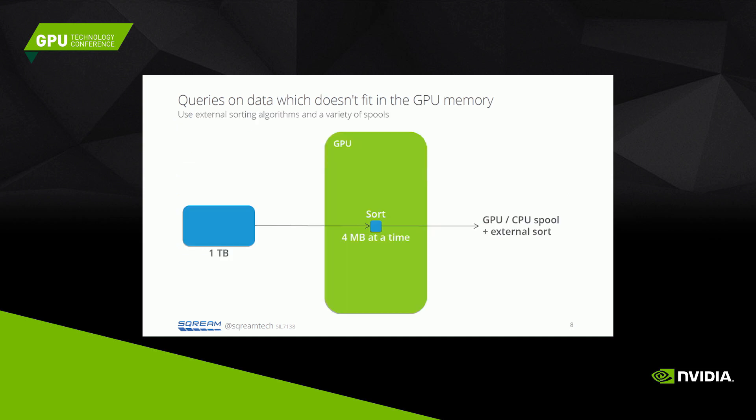This is a simple illustration of the external sort adapted to the GPU. We take the terabyte of data, sort it four megabytes at a time on the GPU, and then plug it into a regular external sort algorithm which runs on the CPU.